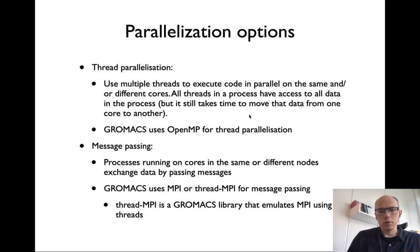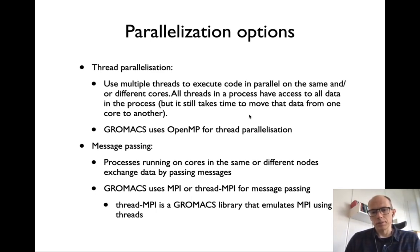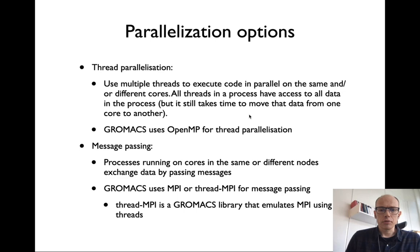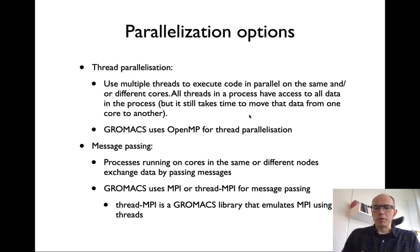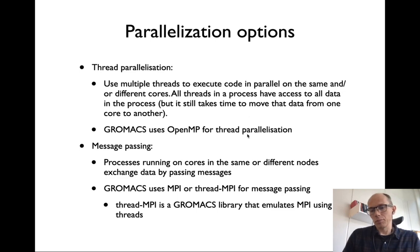On the other hand, there is message passing parallelization, where processes running on cores — either in the same node or different nodes — can exchange data by passing messages through the processor, over the motherboard, or through the network between nodes. GROMACS uses MPI, the standard library for this, or also a built-in thread MPI library. With thread MPI, parallelization is done with threads rather than separate processes, which is convenient for single-node runs.